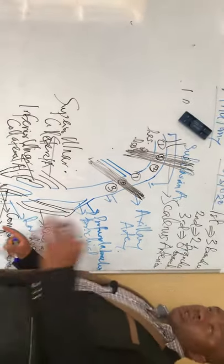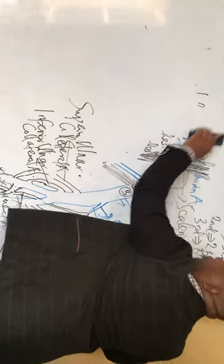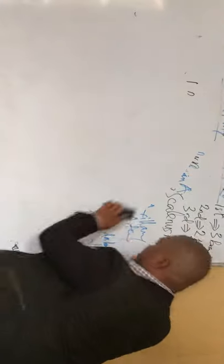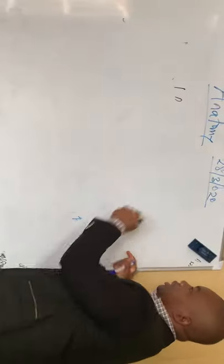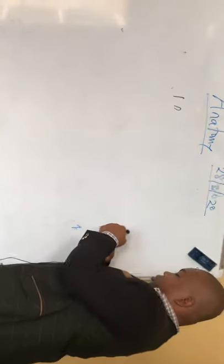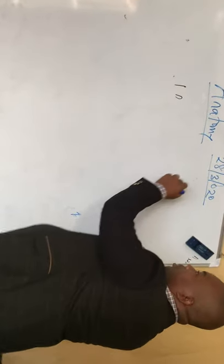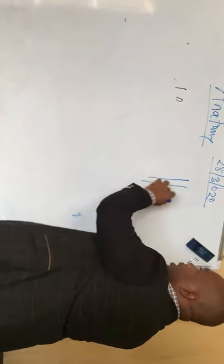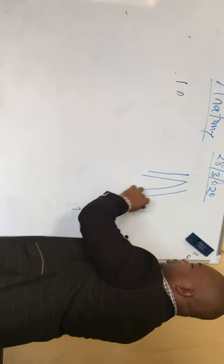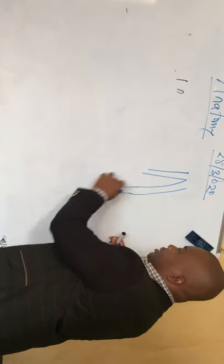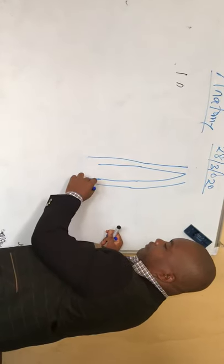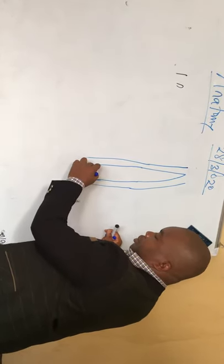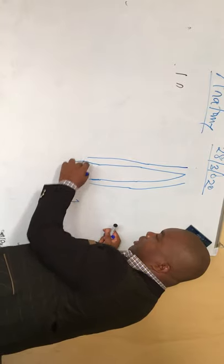The ulnar artery and the radial artery will now go down into the wrist and form an arch.